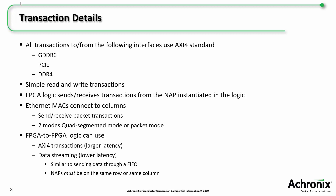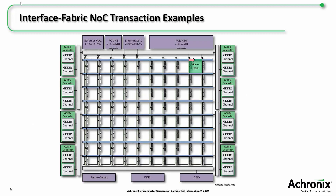Let's look at how transactions use the NOC. One common example is to have user logic in the FPGA request read data from a GDDR6 memory. The master logic in the FPGA fabric sends an AXI read request east along the row to the peripheral portion of the NOC and out to the GDDR6. The response from GDDR6 uses the same path in the opposite direction. For a read request from FPGA logic to DDR4, when an AXI request initiates from the fabric, the request must always be sent east or west first. It then traverses around the peripheral ring of the NOC and out to DDR4. The response comes back using the same path in the opposite direction.